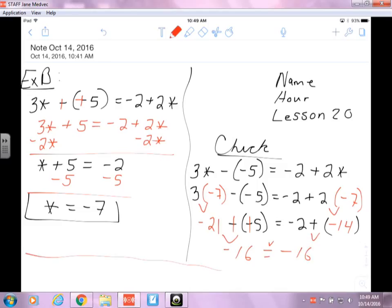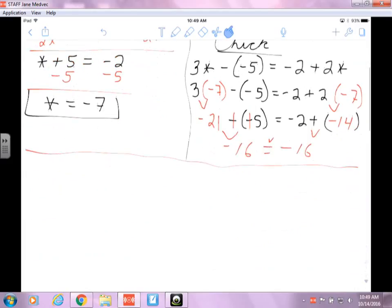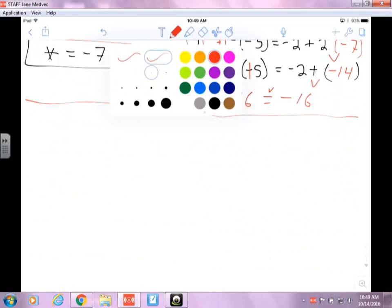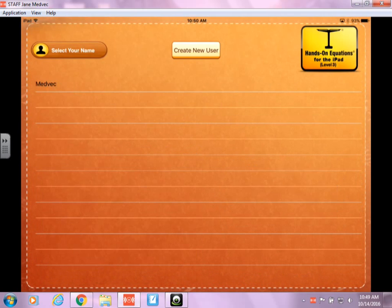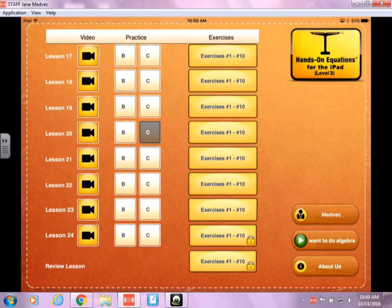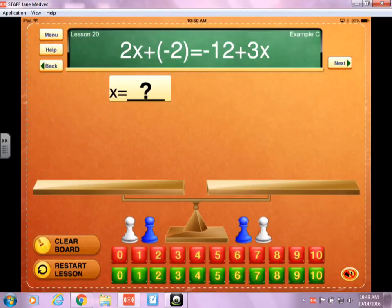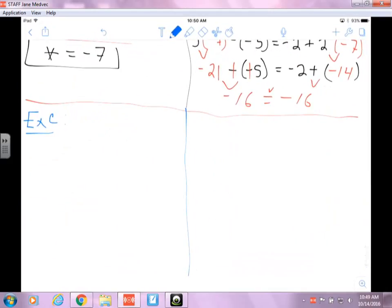All right, let's go then and go down to the next example, which is example C, and I'm going to go back to my app. The problem is 2x plus a negative 2 equals negative 12 plus 3x.